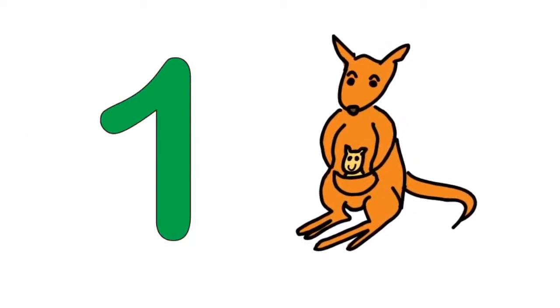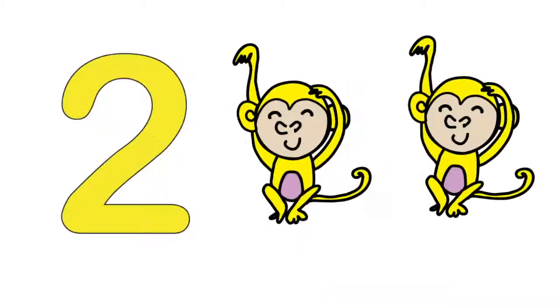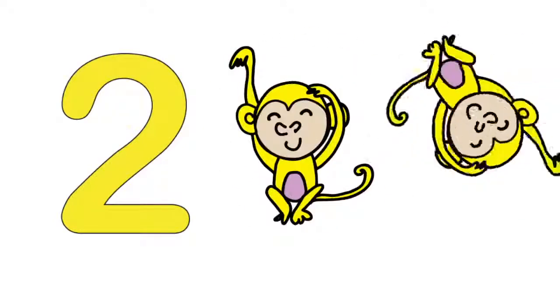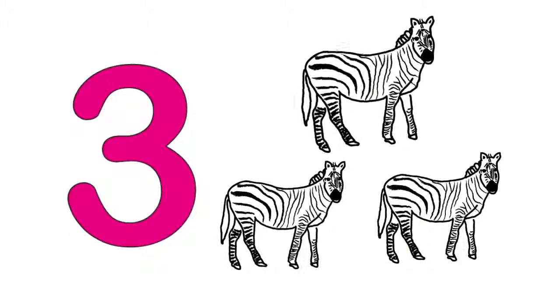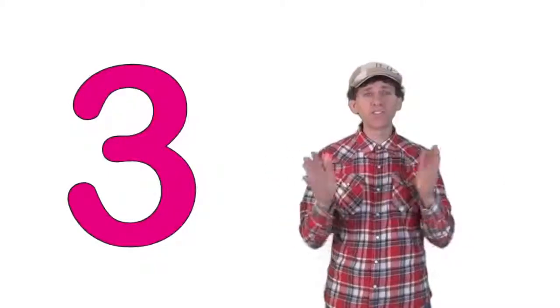One kangaroo. One kangaroo. One clap. One. Two monkeys. Two monkeys. Two claps. One, two. Three zebras. Three zebras. Three claps. One, two, three.